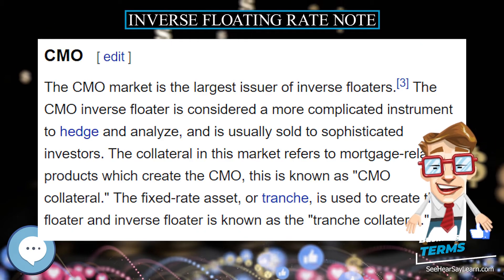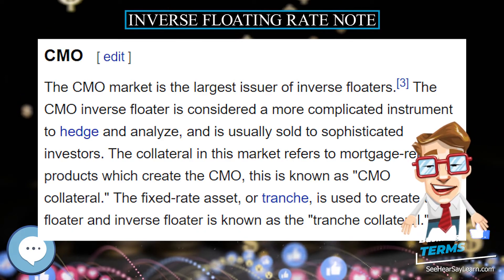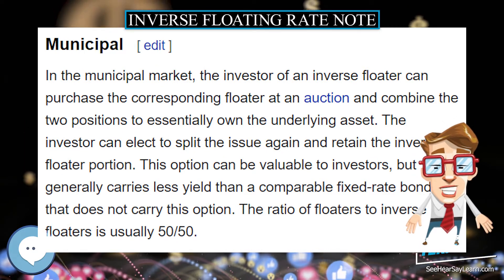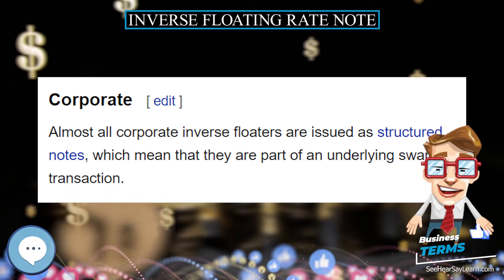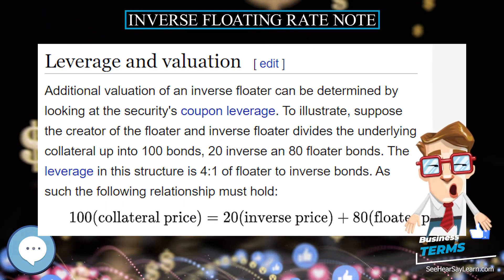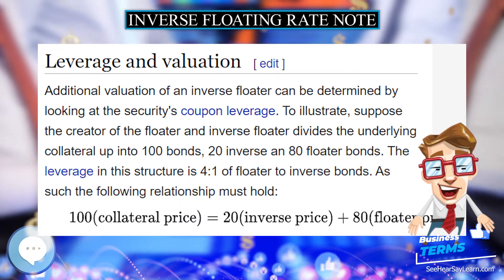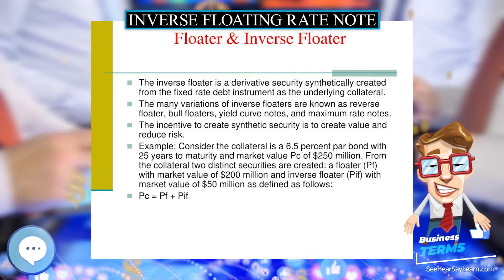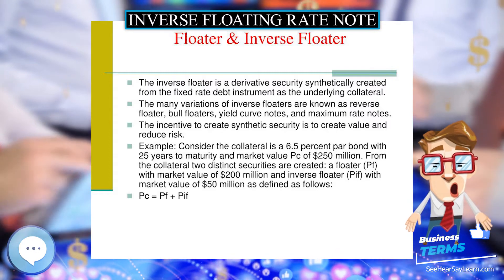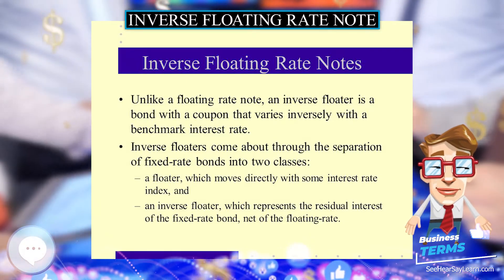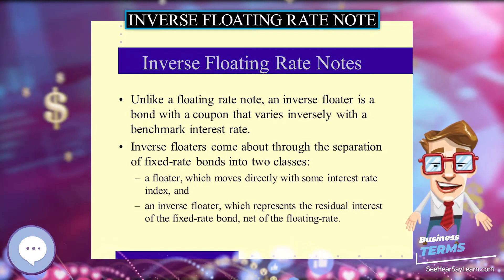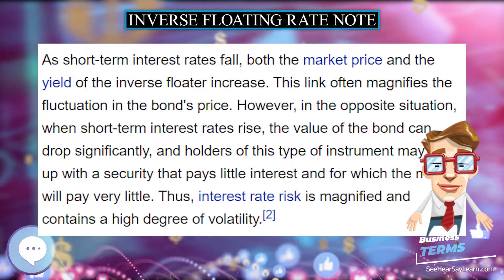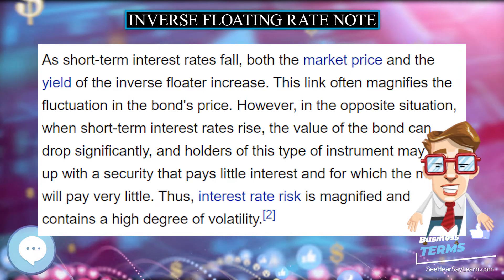The basic structure is the same as an ordinary floating rate note, except for the direction in which the coupon rate is adjusted. These two structures are often used in concert. As short-term interest rates fall, both the market price and the yield of the inverse floater increase. This link often magnifies the fluctuation in the bond's price. However, when short-term interest rates rise, the value of the bond can drop significantly, and holders may end up with a security that pays little interest and for which the market will pay very little. Thus, interest rate risk is magnified and contains a high degree of volatility.